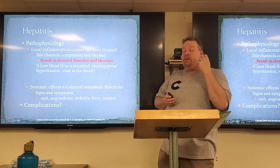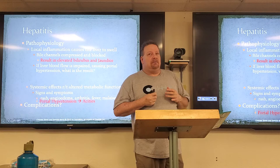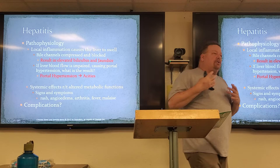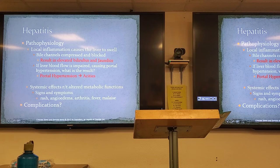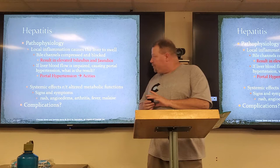If liver blood flow is impaired, causing portal hypertension, what is the result? Portal hypertension — pressure backs up, and we get ascites. Those people who are EQH for a long period of time and abuse alcohol develop cirrhosis of the liver, which increases portal hypertension, and they get ascites, forcing fluid into the abdominal cavity.